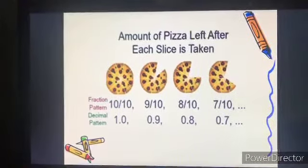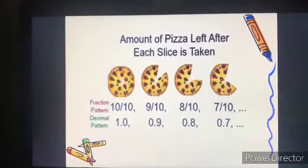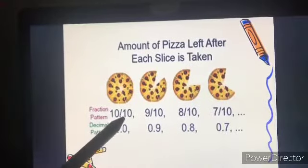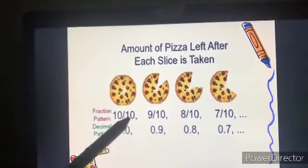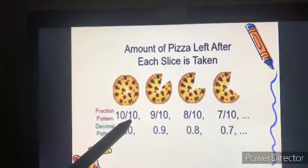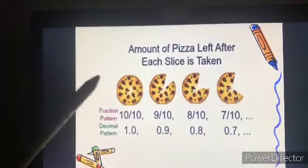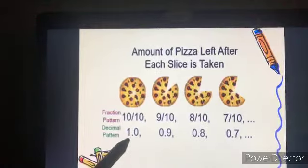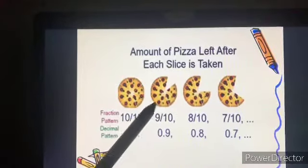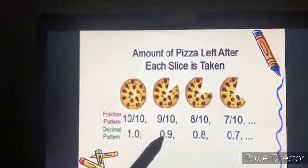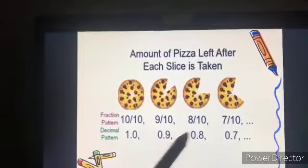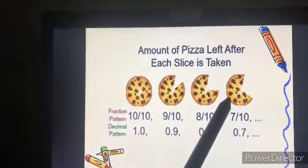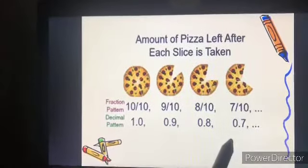Pizza time! This is a pizza divided into ten equal parts — the denominator is ten, telling us there are ten equal parts. When all slices are with you, you have one whole pizza. Nine slices: nine by ten = zero point nine. Eight slices: eight by ten = zero point eight. Seven slices: seven by ten = zero point seven.